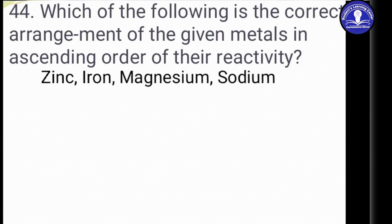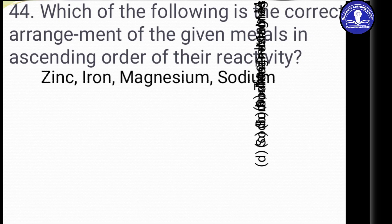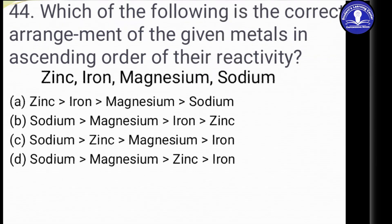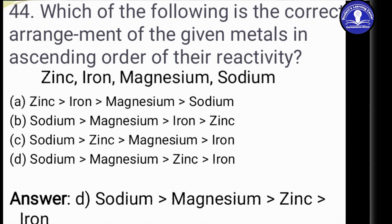Question 44: Which of the following is the correct arrangement of the given metals in ascending order of their reactivity — zinc, iron, magnesium, and sodium? Option A: Zn > Fe > Mg > Na. Option B: Na > Mg > Fe > Zn. Option D: Na > Mg > Zn > Fe. The answer is Option D: Sodium is greater than magnesium, magnesium is greater than zinc, and zinc is greater than iron.